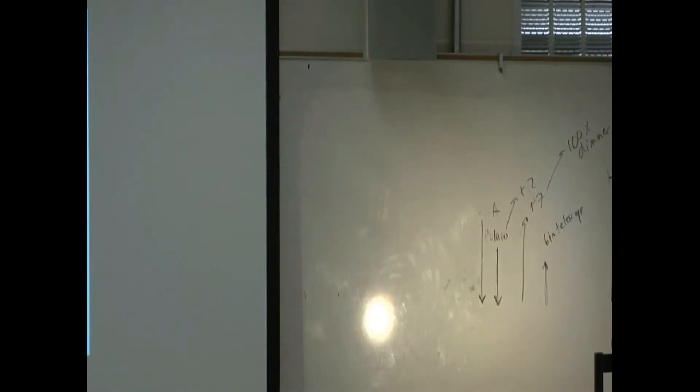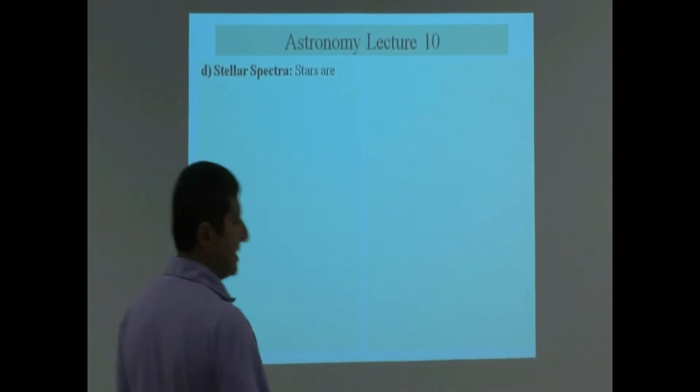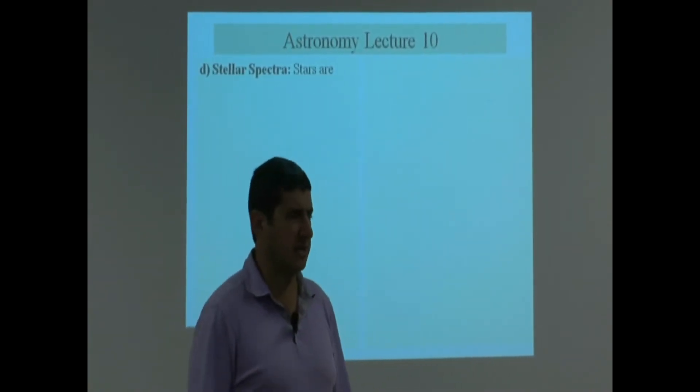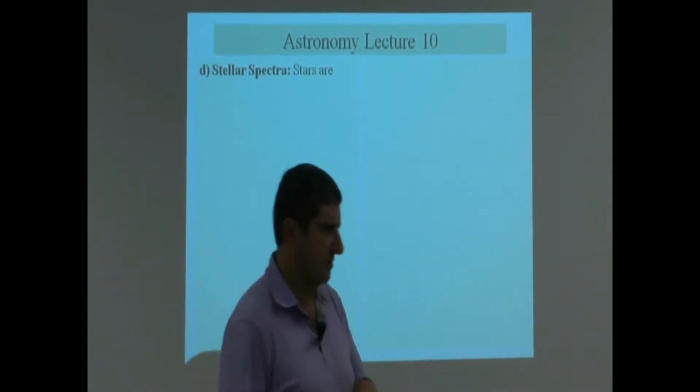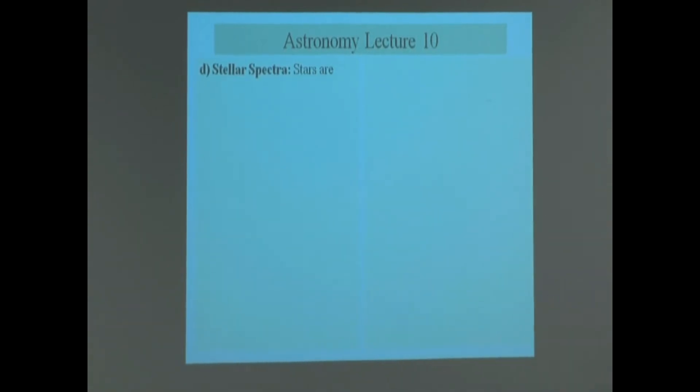We've talked about apparent luminosity, we've talked about absolute luminosity, we've talked about the Hipparchus scale. Let's change topics a little bit and talk about stellar spectra, the spectra of stars.